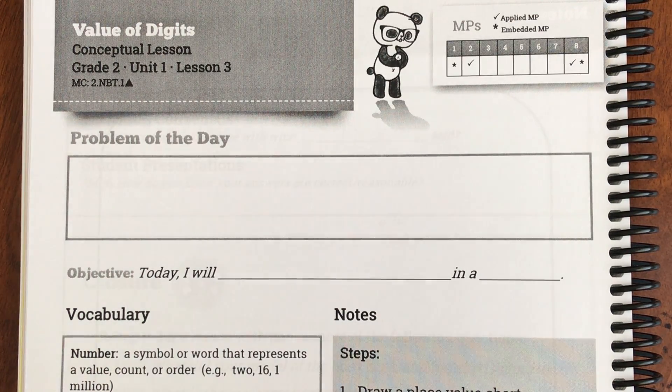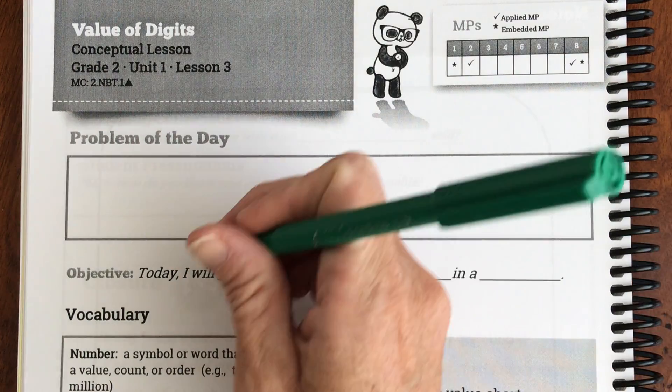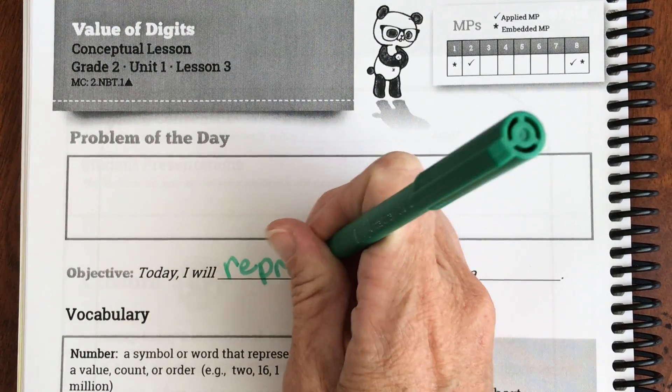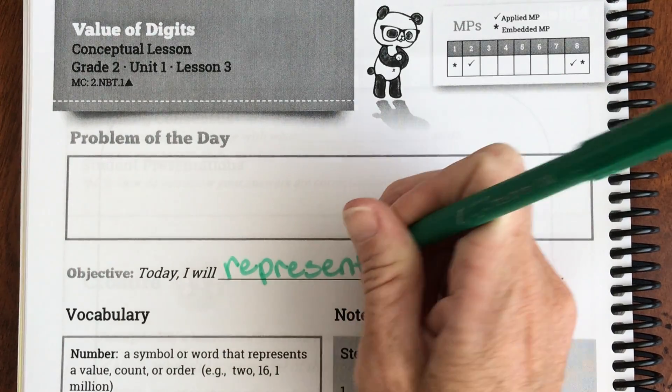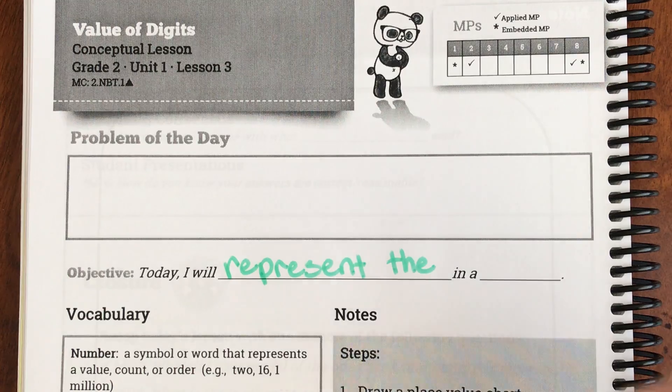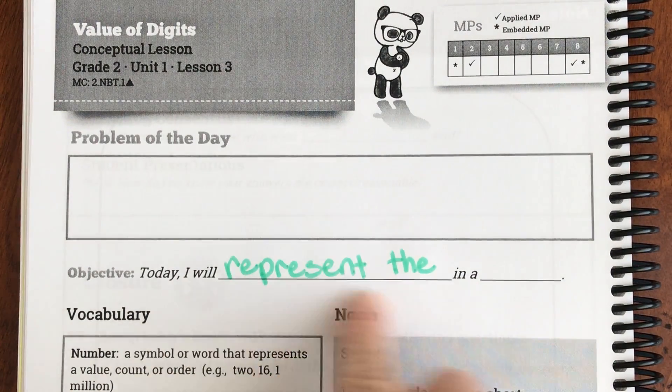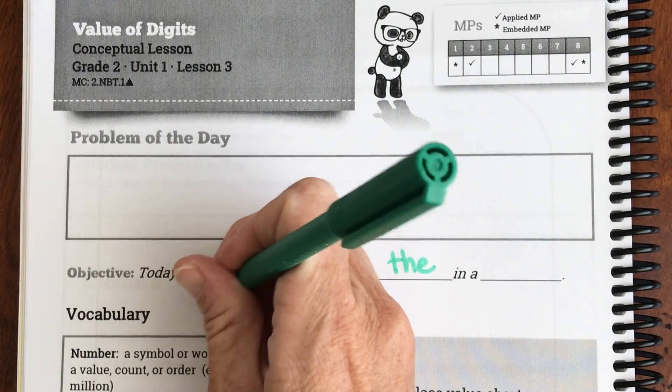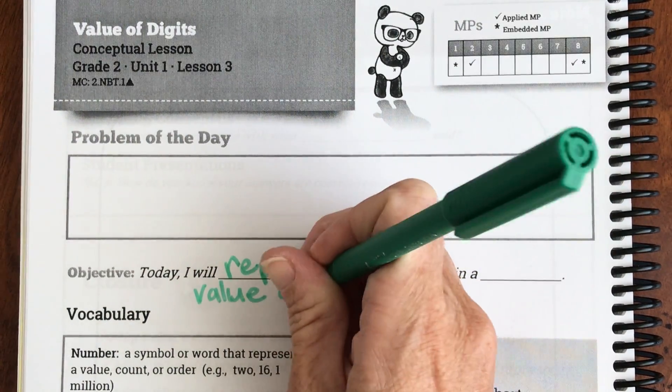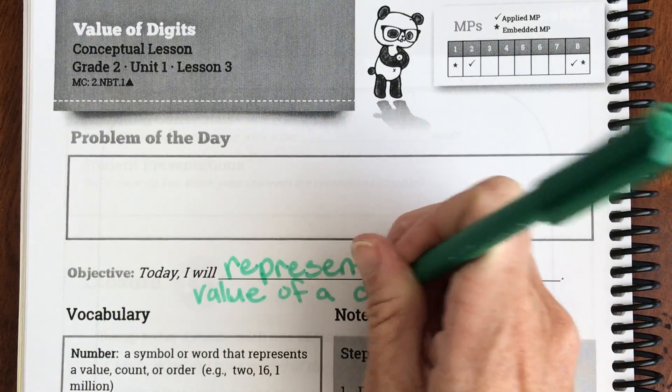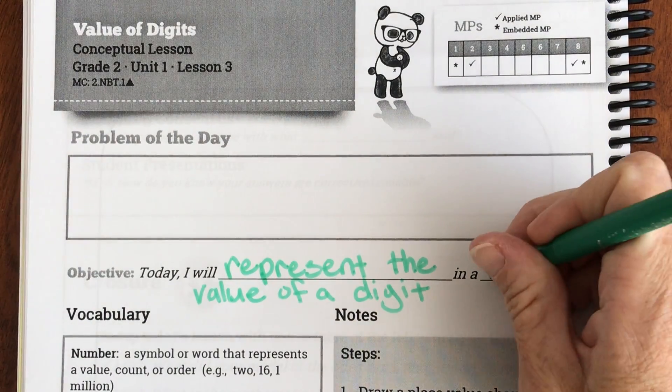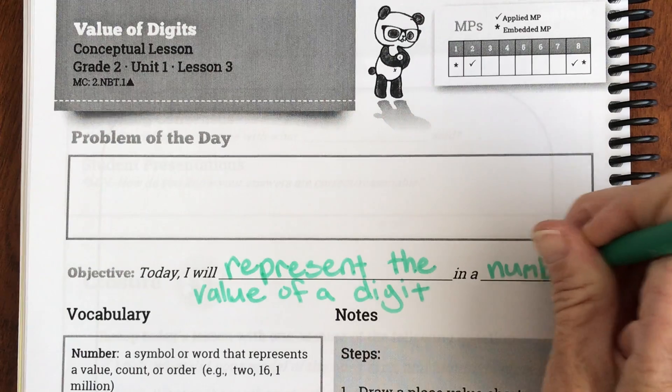represent the, and I don't have enough room so I'm going to write down here, the value of a digit in a number.